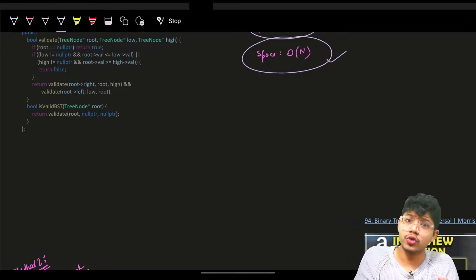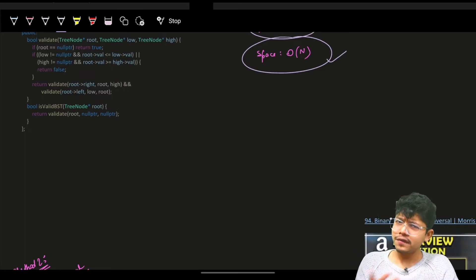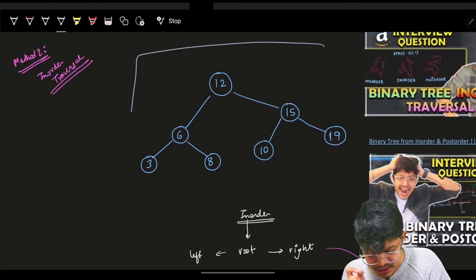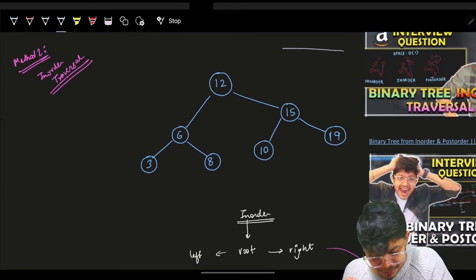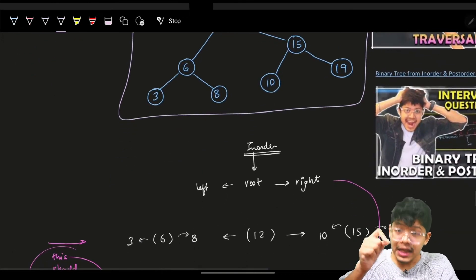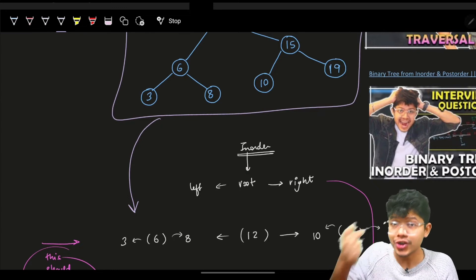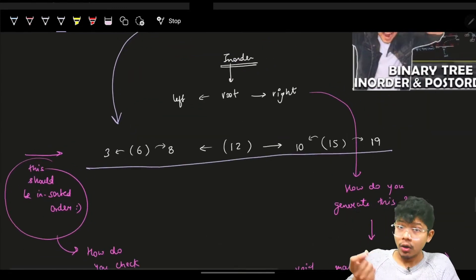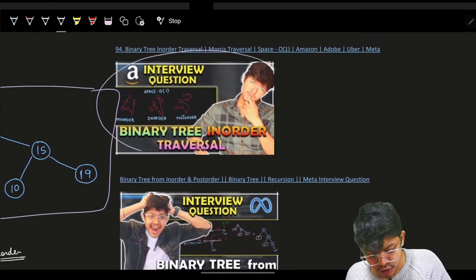We can solve it using a simple fact: if we do an in-order traversal of a valid binary search tree, the result will be a sorted array. If you don't know what in-order traversal is, watch the relevant video on binary tree traversals.